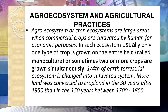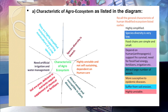Our next item in the human modified ecosystem is the agro-system and agricultural practices. Agro-ecosystems or crop ecosystems are large areas where commercial crops are cultivated by humans for economic purposes. In such ecosystems, usually only one type of crop is grown on the entire field — this practice is called monoculture. Sometimes two or more crops are also grown simultaneously. One-fourth of Earth's terrestrial ecosystem has been changed into cultivated systems. The characteristics of agro-ecosystems and human modified ecosystems in general are also listed on this slide for your revision.